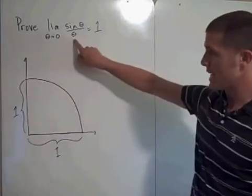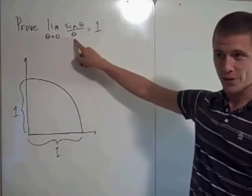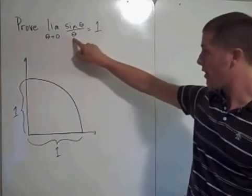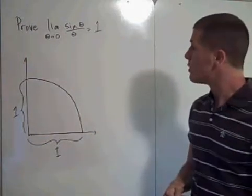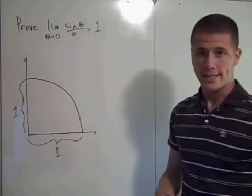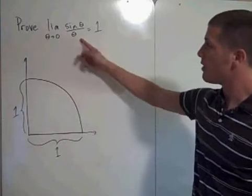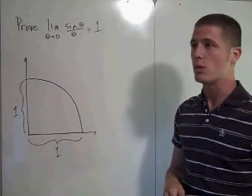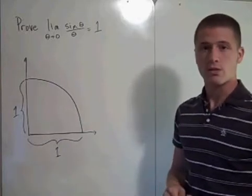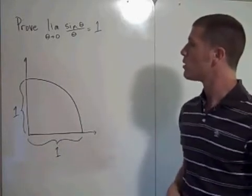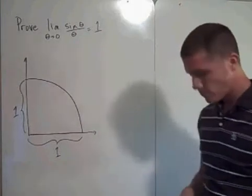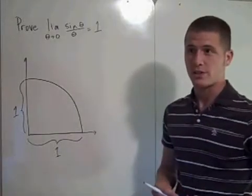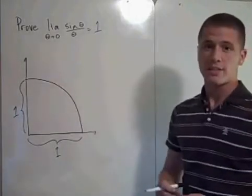If you have a function less than sine of theta over theta whose limit is 1 as theta approaches 0, and a function greater than sine of theta over theta whose limit is 1 as theta approaches 0, then sine of theta over theta as theta approaches 0 is squeezed between these other two functions, both of which have limits of 1 when theta approaches 0. So we need to find those two functions to actually sandwich sine theta over theta.